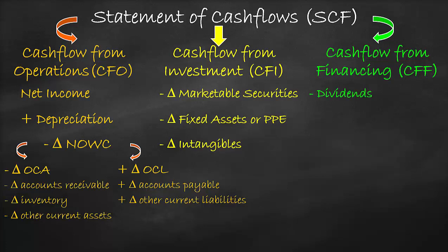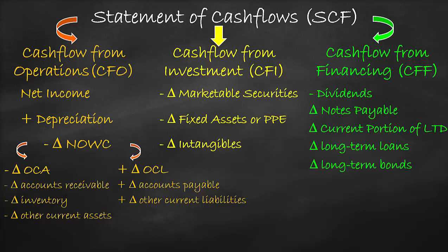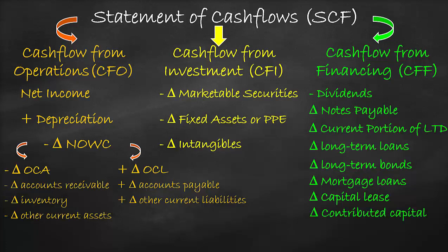Then we include the change in non-operating liabilities. Examples are change in notes payables, change in current portion of long-term debt, change in long-term loans, or change in long-term bonds. Then we include the change in equity — specifically the change in contributed capital. We do not include the change in retained earnings, as retained earnings is part of net income, which is already included under cash flow from operations. Otherwise, we would be double counting. Then we sum all these items to get the net cash flow from financing.